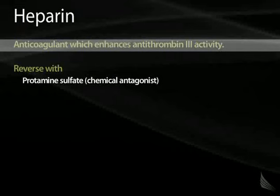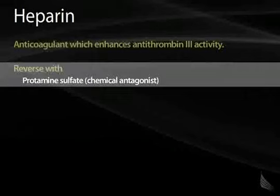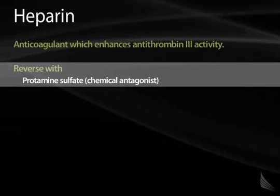Heparin is another anticoagulant. It works by enhancing antithrombin 3, which inhibits thrombin. Heparin overdose can be reversed with protamine sulfate — protamine is a chemical antagonist that binds heparin and prevents it from binding antithrombin 3. However, heparin has a very short half-life, so simply waiting will allow the heparin level to decrease.